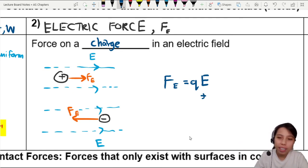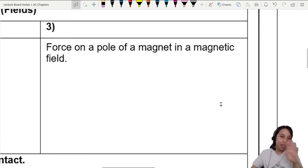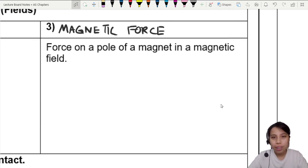Next, one more A2 force. This one, the force of the pole of a magnet in a magnetic field, is called magnetic force and this one we affectionately call it FB. Why B? I don't know, we make the weirdest choices.